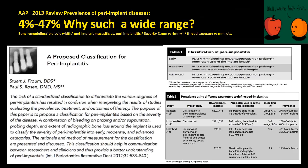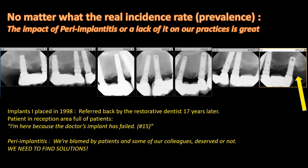One reason the range of 4% to 47% is so wide is that our diagnosis is not robust. Some clinicians don't report early bone loss because it's unclear when saucerization ends and pathologic bone loss begins — for instance, whether a 4 mm pocket represents peri-implantitis. We need a better classification system. But regardless of exact prevalence, peri-implantitis still impacts our practices greatly.